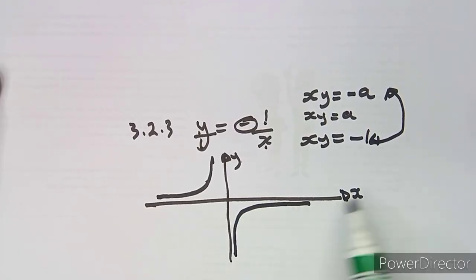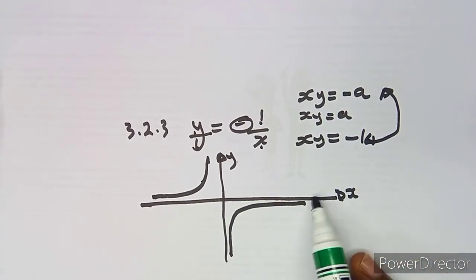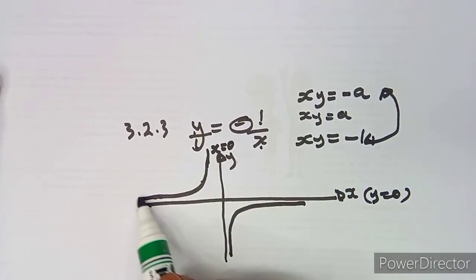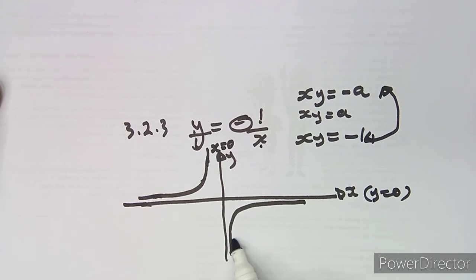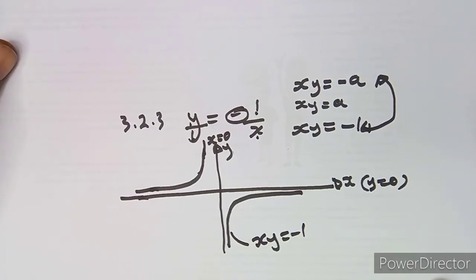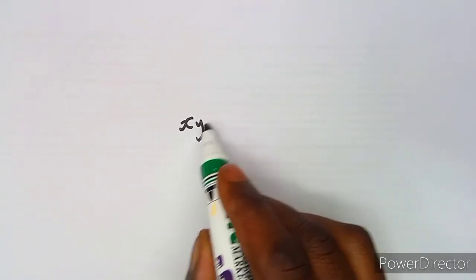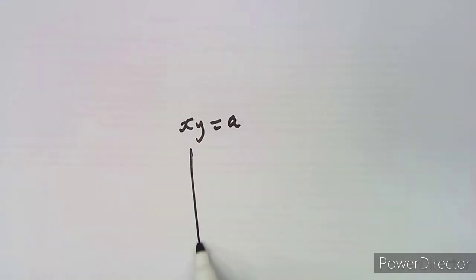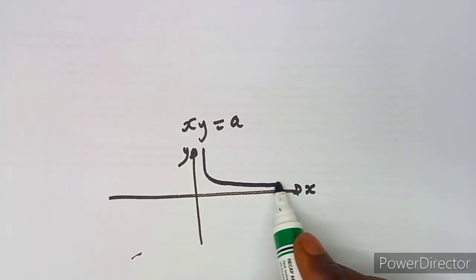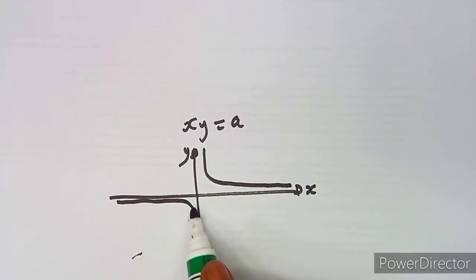For a hyperbola of the form xy = -1, the graph appears in the second and fourth quadrants. The x-axis (y = 0) and the y-axis (x = 0) are the asymptotes — the graph approaches but never crosses them. When xy equals a negative value, the curves are in the second and fourth quadrants.